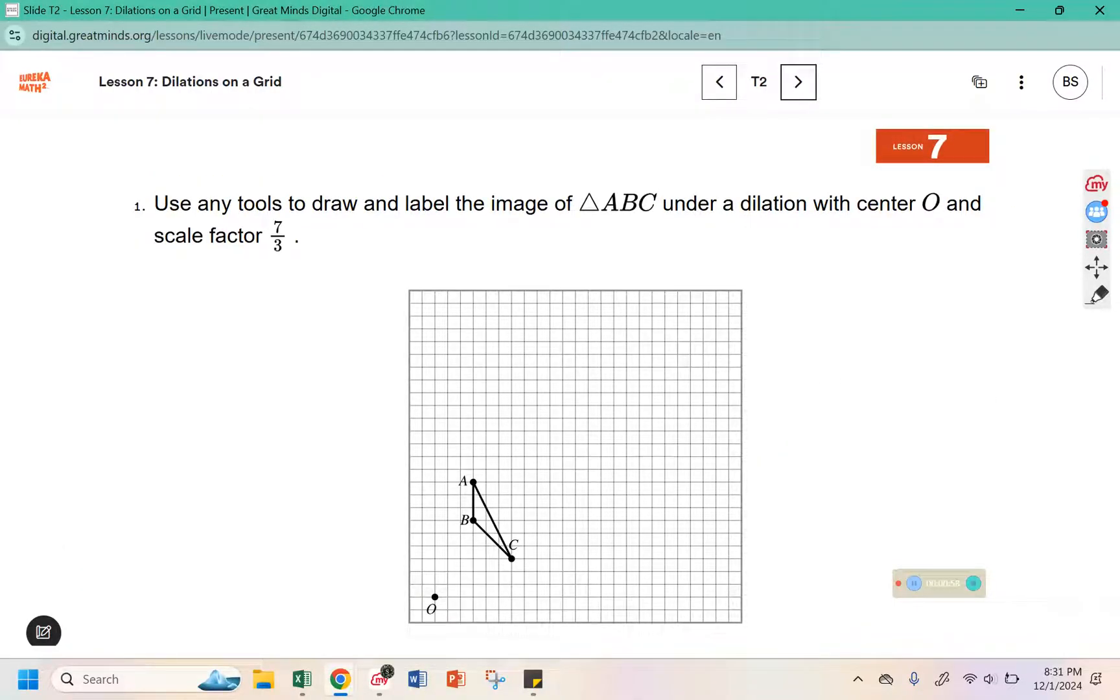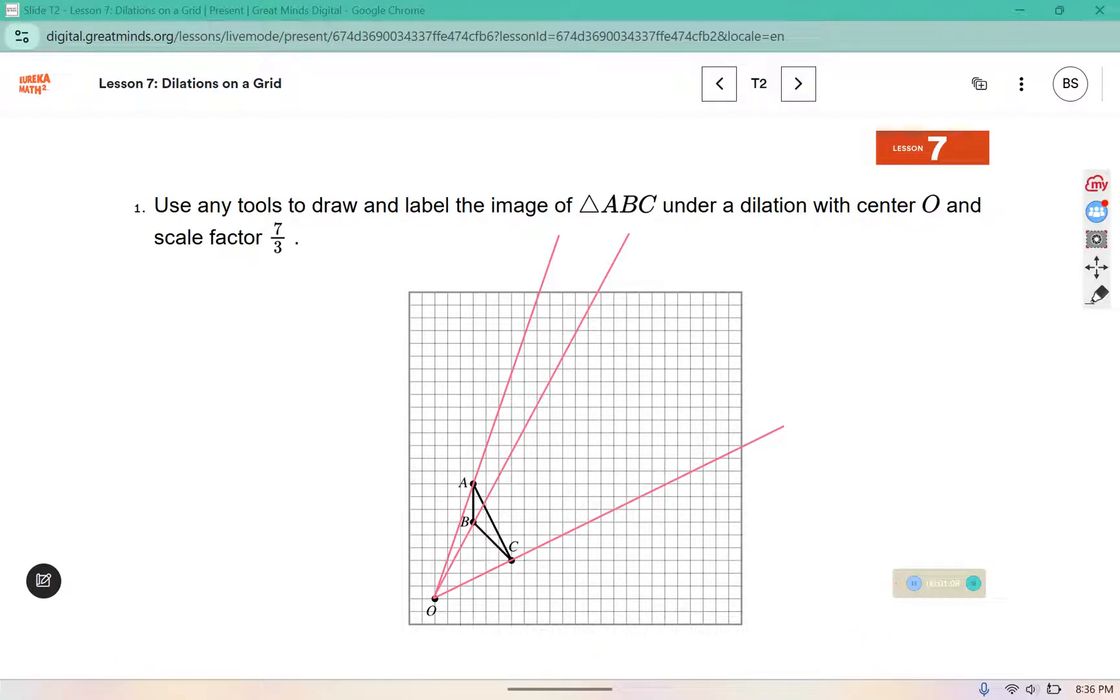Use any tool to draw and label the image of triangle ABC under a dilation with center O and a scale factor of 7 thirds. So we can extend the lines through the center of dilation and then use that scale factor of 7 thirds. Remember we talked about using the lines as a guide. This C is 1, 2, 3, 4, 5, 6 away from O. So 6 times 7 thirds. Well 6 times 7 is 42 over 3, which is 14.